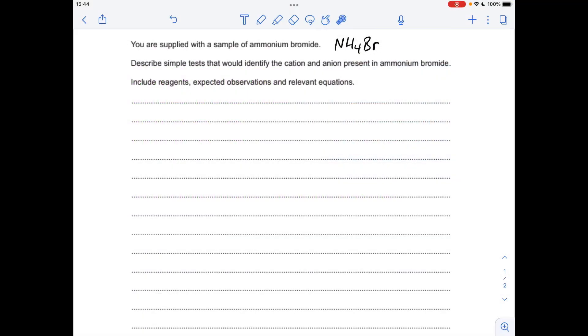Okay, so quite a simple question. We've got a sample of ammonium bromide. The cation in here is the ammonium ion NH4+, and the anion is the Br- ion.